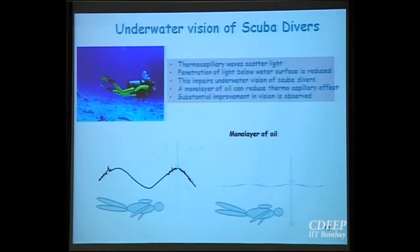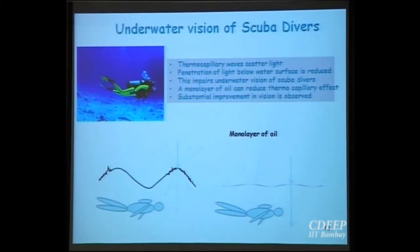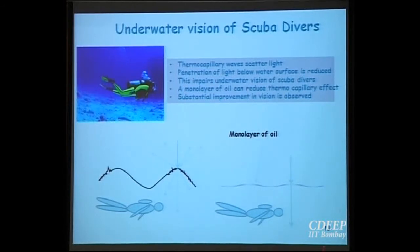Another example is the scuba diver. Due to temperature differences, small waves of the order of nanometers arise at the water surface via the thermocapillary effect. Light entering the water is scattered by these waves, making it dark for the diver. However, if the diver spreads a small amount of oil, it dampens these waves. Once the waves are dampened, the diver can see — a thin film of oil restores visibility.